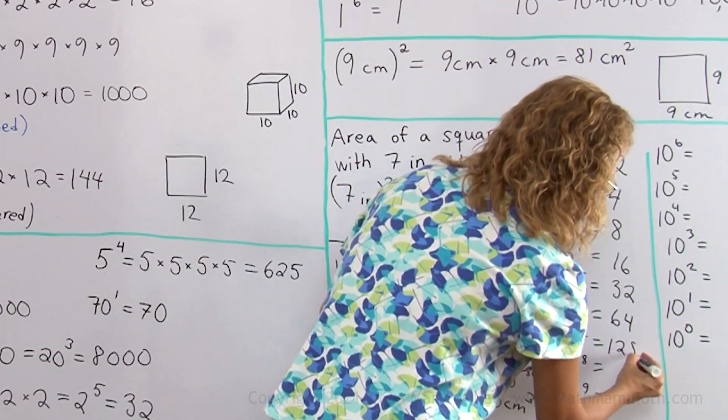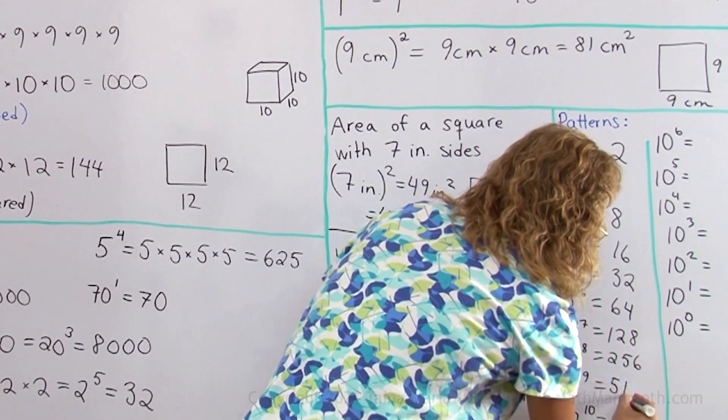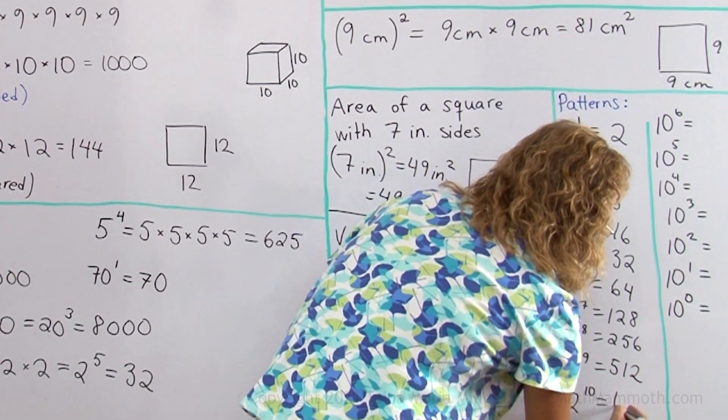Multiply this times 2 one more time to get this one, 64, 128, 256, 512, and then 1024.